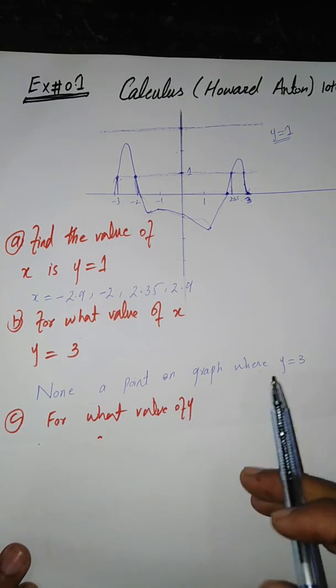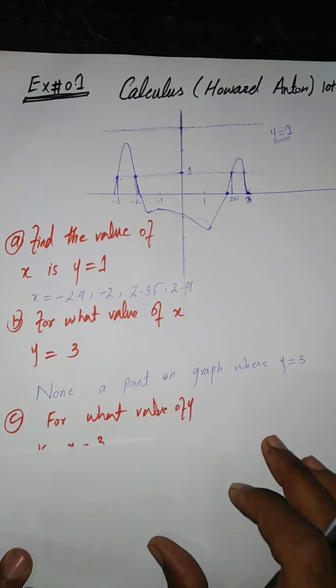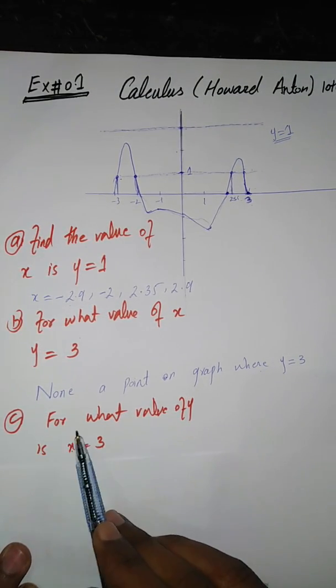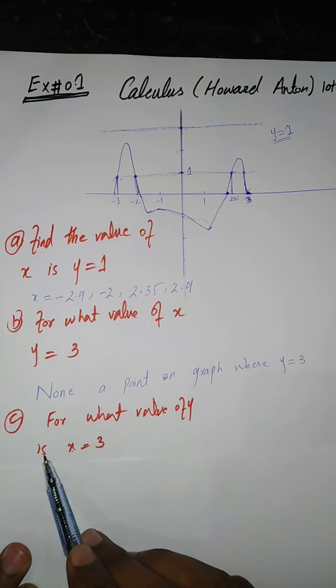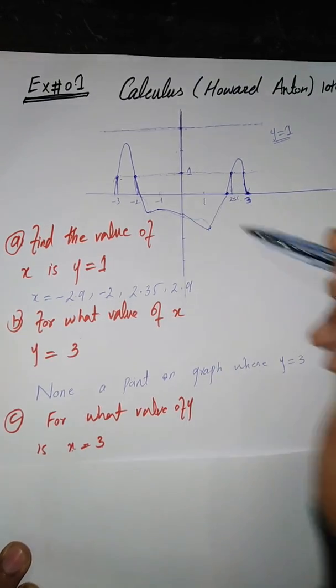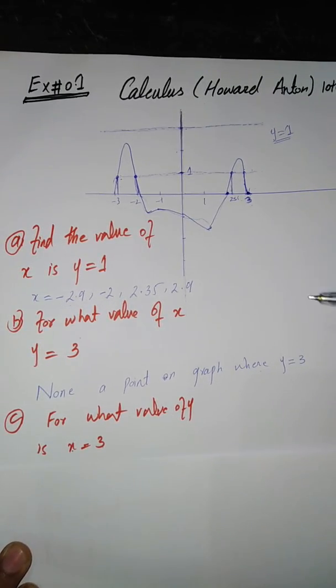For part C, for what value of Y is X equal to 3. Here we have to find the value of Y, and X is given. The value of X is given and we have to find the value of Y.